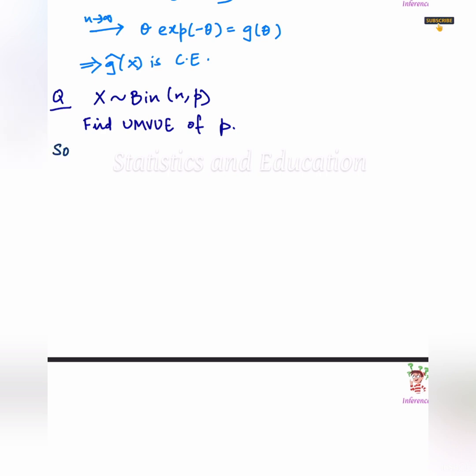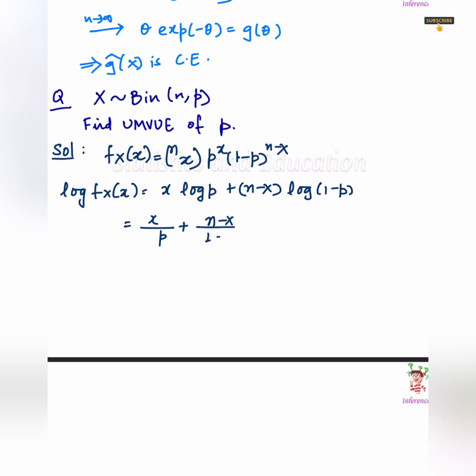Now, we have next question. x belongs to binomial n,p and we have to find the UMVUE of p. I'm sure this question you have done a lot of times. Let's just revise it. So, we have x log p plus n minus x log 1 minus p. So, when I differentiate it with respect to p, I'll get x by p plus n minus x upon 1 minus p.